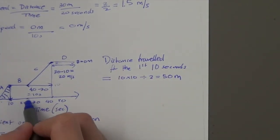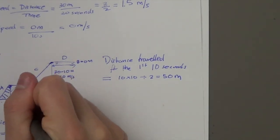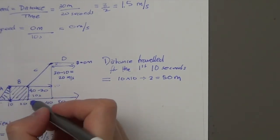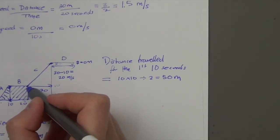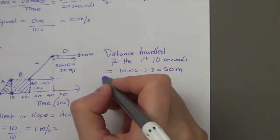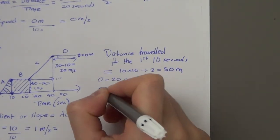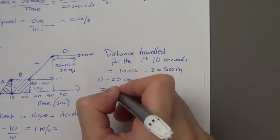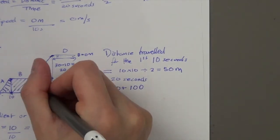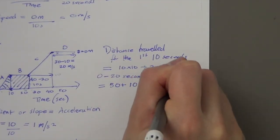What about from 0 to 20 seconds? This time we add the rectangle shape: that's 10 times 10 = 100 metres. So the distance travelled from 0 to 20 seconds is 50 plus 100, which is 150 metres.